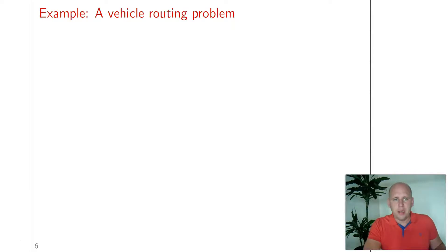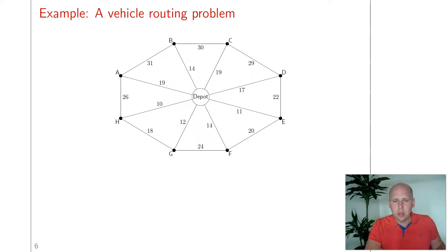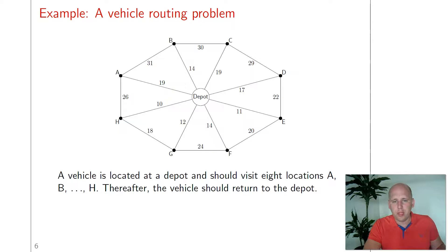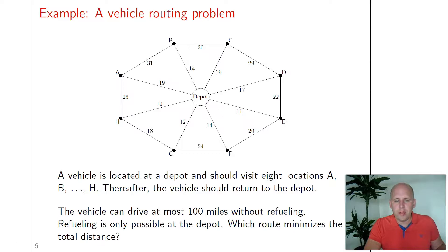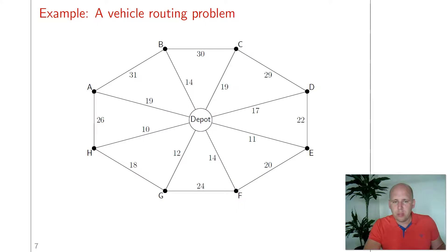Let's now apply the idea of heuristics and relaxation to a very simple vehicle routing problem. We have a depot and eight locations. One vehicle is located at the depot and should visit all eight locations A through H, and after that it should also return to the depot. There is one more constraint: the vehicle can drive at most 100 miles without refueling, and refueling is only possible at the depot. The question is which route minimizes the total distance.